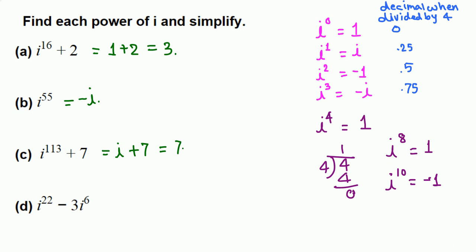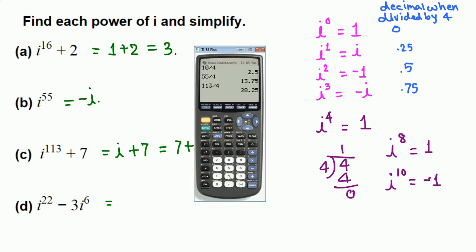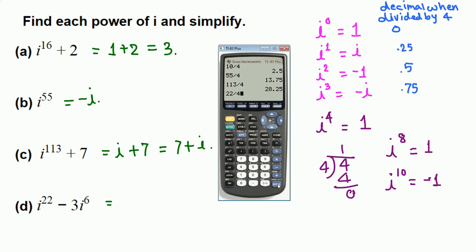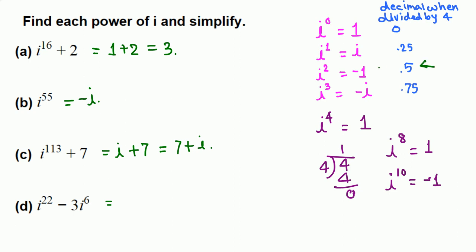Finally, i raised to 22 minus 3i^6. Divide 22 by 4. 22 divided by 4 gives 5.5. The 0.5 decimal means remainder 2, so that's negative 1. Now minus 3 times i raised to 6. Divide 6 by 4, you get 1.5.